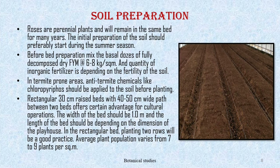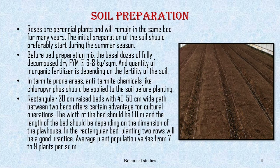Soil preparation: roses are perennial plants and will remain in the same bed for many years. Initial preparation of the soil should preferably start during the summer season. Before bed preparation, mix basal doses of fully decomposed dry farm yard manure at 6 to 8 kg per square meter; the quantity of inorganic fertilizer depends upon the fertility of the soil. In termite-prone areas, anti-termite chemicals like chloropyriphos should be applied before planting. Rectangular 30 cm raised beds with 40 to 50 cm wide paths between beds offer certain advantages for cultural operations. The width of the bed should be 1 meter; two rows per rectangular bed is good practice, with an average plant population of 7 to 9 plants per square meter.